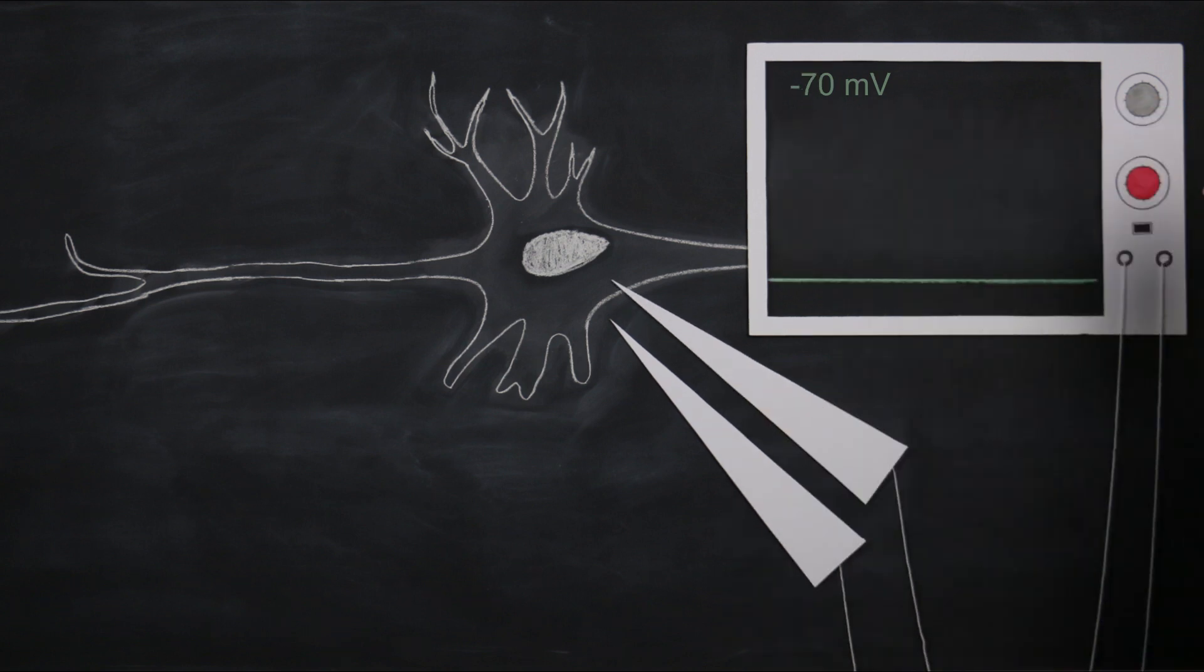When the tip of one of the electrodes, the intracellular electrode, is inserted into the neuron, a steady membrane potential of about negative 70 millivolts is recorded.